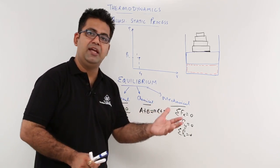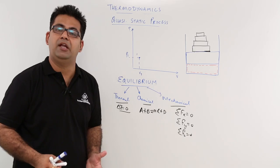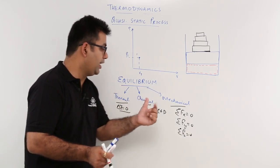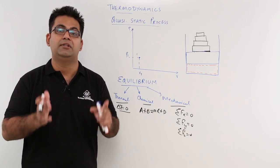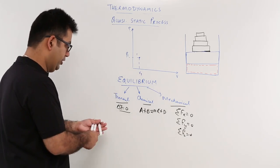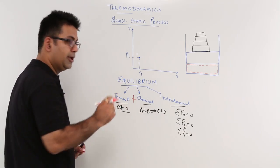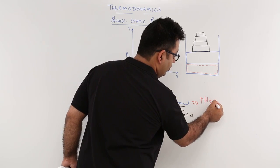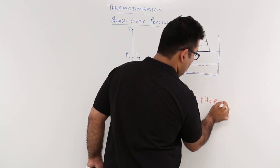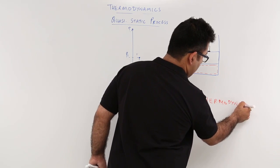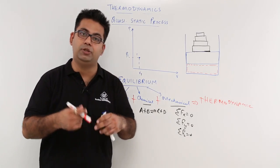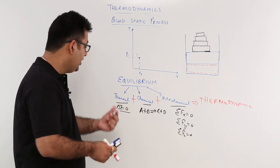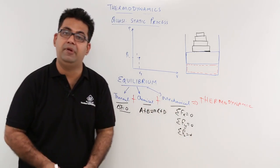When you have all three equilibria coexisting simultaneously in a system — the coexistence of thermal equilibrium, chemical equilibrium, and mechanical equilibrium — then the system is said to be under thermodynamic equilibrium. So thermal plus chemical plus mechanical gives rise to thermodynamic equilibrium.